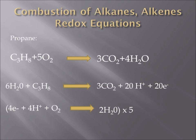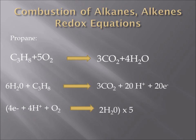The combustion of hydrocarbons are all redox reactions, which contain both oxidation and reduction reactions. Here are two examples indicating such type of reaction. The first example is burning propane, which is C3H8. Theoretically speaking, the products for all combustion of hydrocarbons are carbon dioxide and water. The only difference among them is the coefficient that appears in front of reactants and products. There are two major methods used to balance redox reactions: one is using oxidation number and the other is using the half-reaction method.